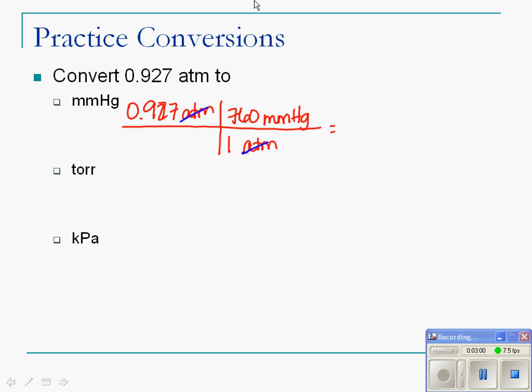And let me take my calculator out here. Something a little less than 760. And I get 704.52, but I'm only allowed three sig figs, so my answer is 705 millimeters of mercury.